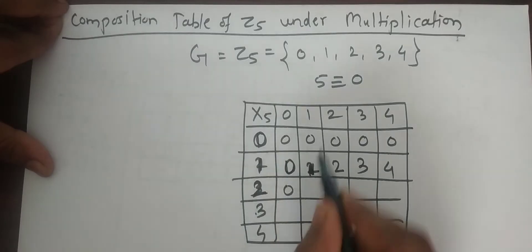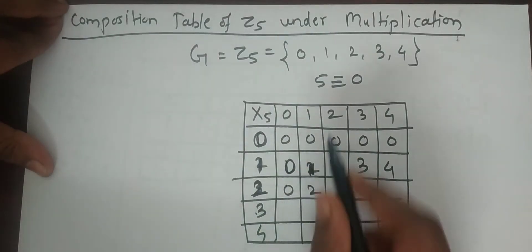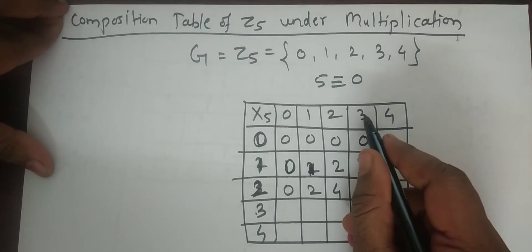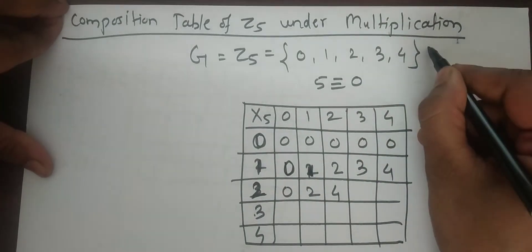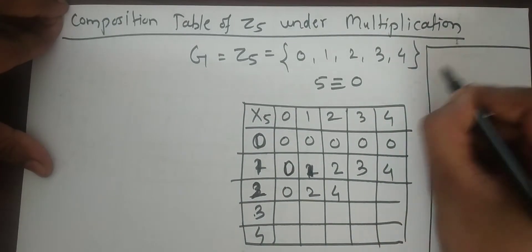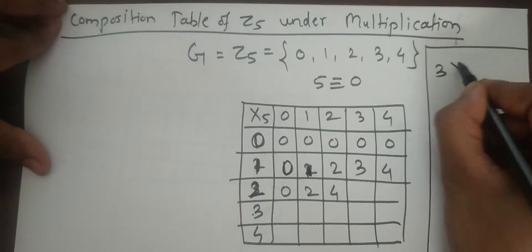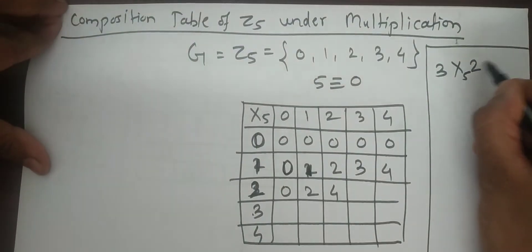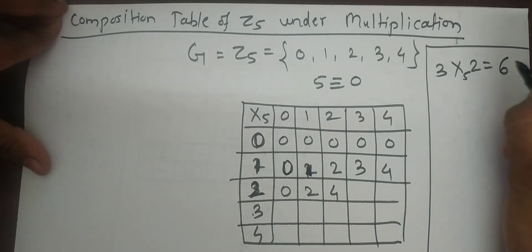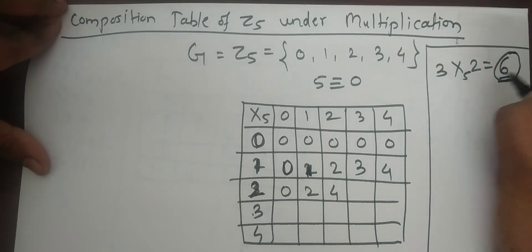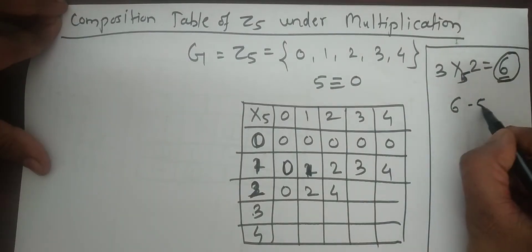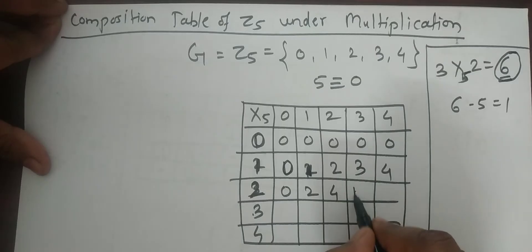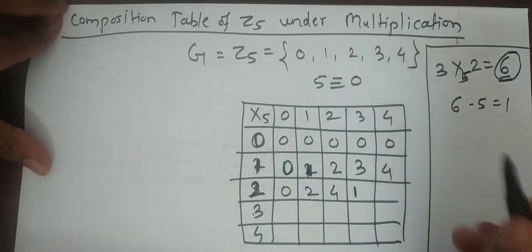For the ×2 column: 0×2=0, 1×2=2, 2×2=4. For 3×2, we get 6 — the nearest multiple of 5 is 5, so 6 minus 5 is 1. The remainder is always what we write here.